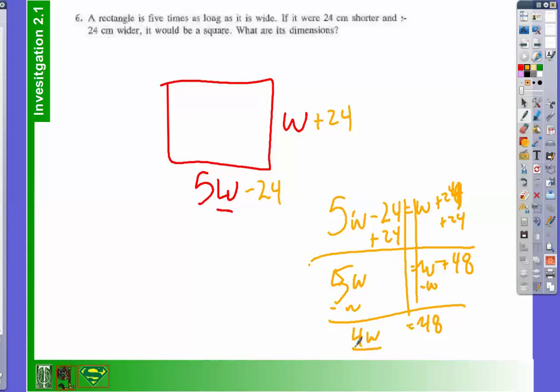Divide by 4, divide by 4. So I get W is equal to 12. Well, if W is 12, that makes 5 times 12 is 60. So those are my dimensions.